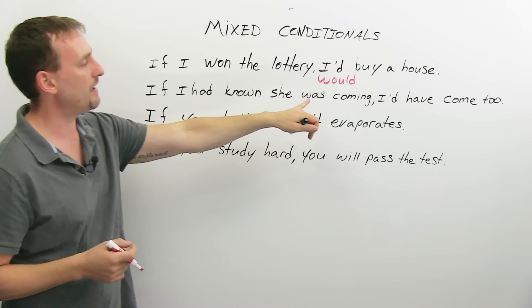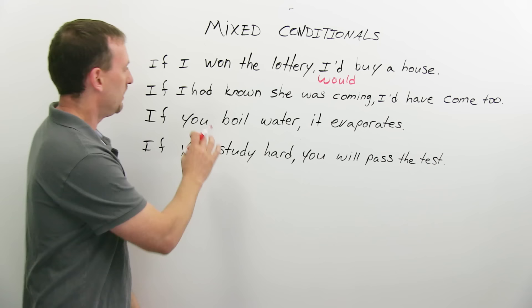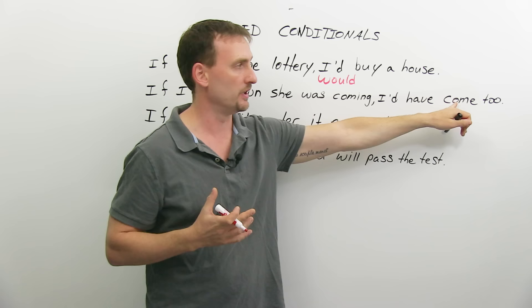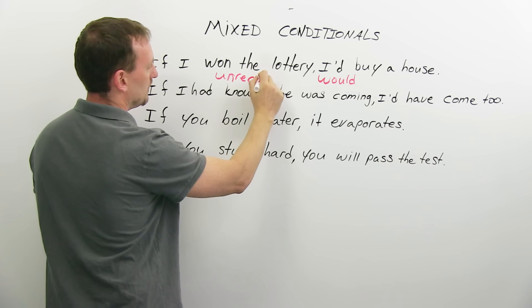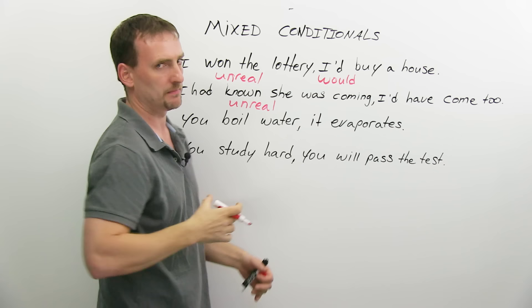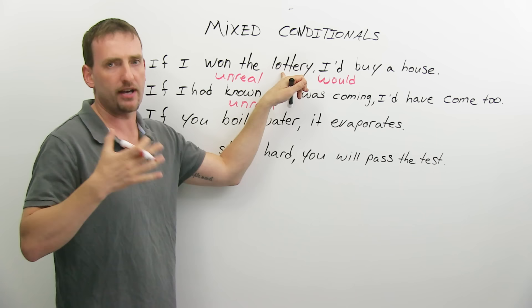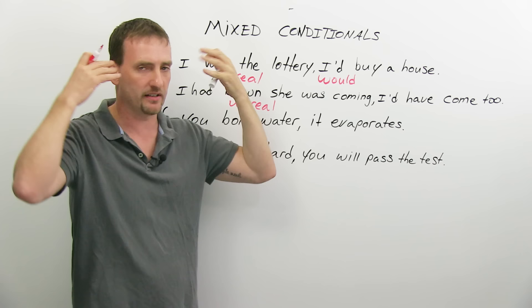If I had known she was coming, I'd have come too. Here I have the past perfect plus would have plus PP, past participle verb. Now, these are both unreal, meaning that they are hypothetical, they are imaginary. This is about a future or present unreal situation. I didn't win the lottery, I'm not buying a house. This is all just imagination.